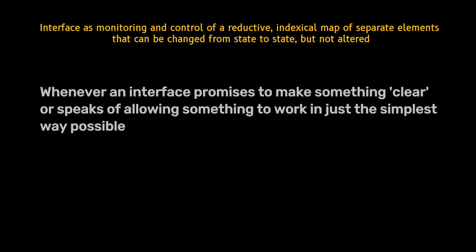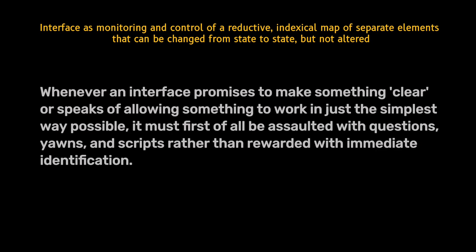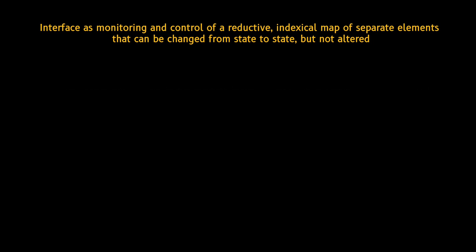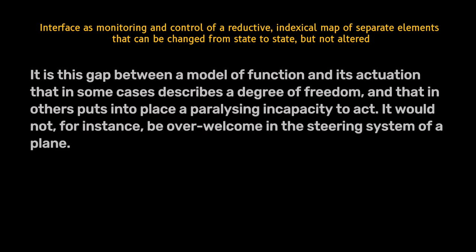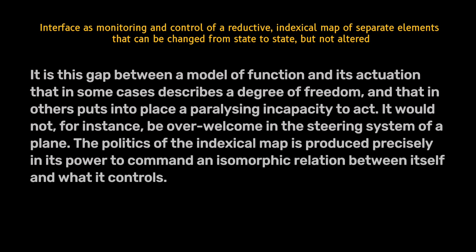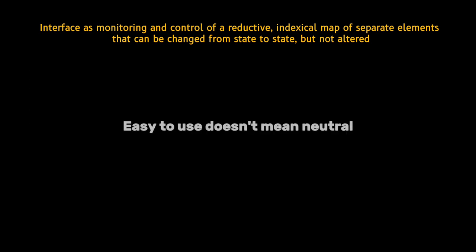Whenever an interface promises to make something clear or to allow something to work in just the simplest way possible, it must first of all be assaulted with questions, rather than rewarded with immediate identification. It is this gap between a model of function and its actuation that in some cases describes a degree of freedom, and in others puts into place a paralyzing incapacity to act — it would not, for instance, be over-welcome in the steering system of a plane. The politics of the indexical map is produced precisely in its power to command an isomorphic relation between itself and what it controls. It must not, it cannot, slip. An interface here is never neutral, regardless of its promises about how easy it is to use.